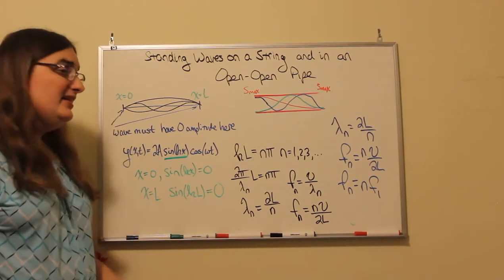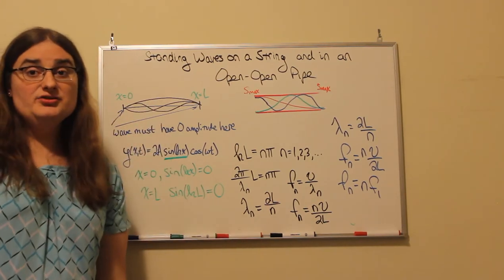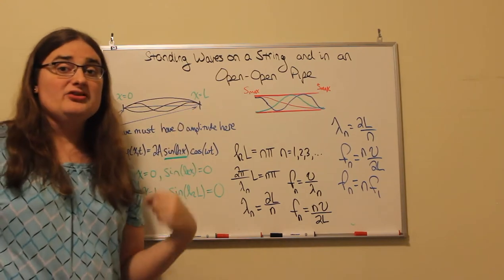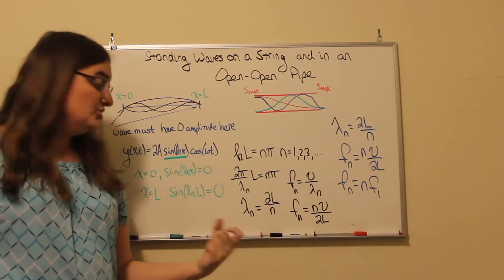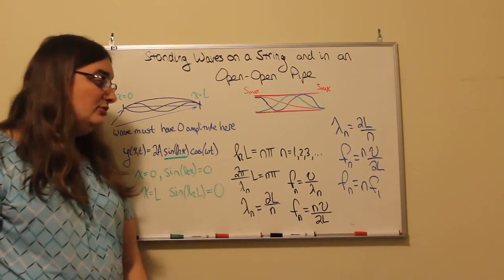If I make one end of the string x equals zero, then the sine of zero is zero. We're good there. That means we need to look at the far end when x equals the length of the string, l. So the sine of my wave number times l has to equal zero.